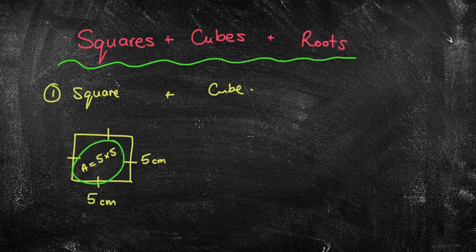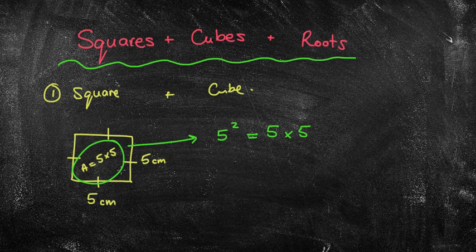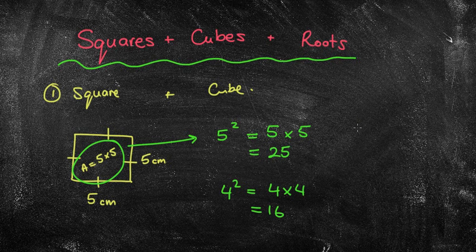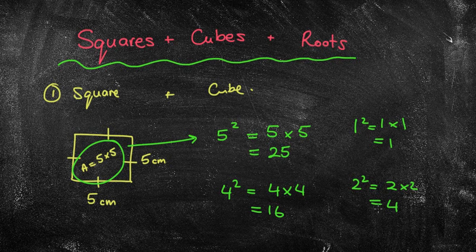A squared number is something like this: 5 with a little 2 next to it means 5 times 5, which equals 25. 4 squared means 4 times 4, which is 16. 1 squared is 1 times 1, which is 1. 2 squared is 2 times 2, which is 4. Squared numbers are simply numbers that have been multiplied by themselves, just like finding the area within an actual square.